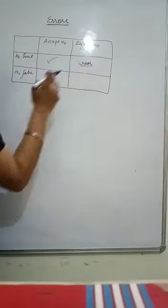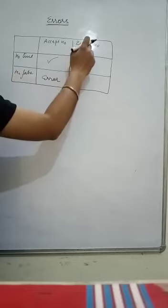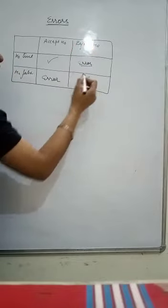If something is true and we are rejecting it, this is an error. If something is false and we are accepting it, again that becomes an error. If something is false and we are rejecting it, this is quite okay.